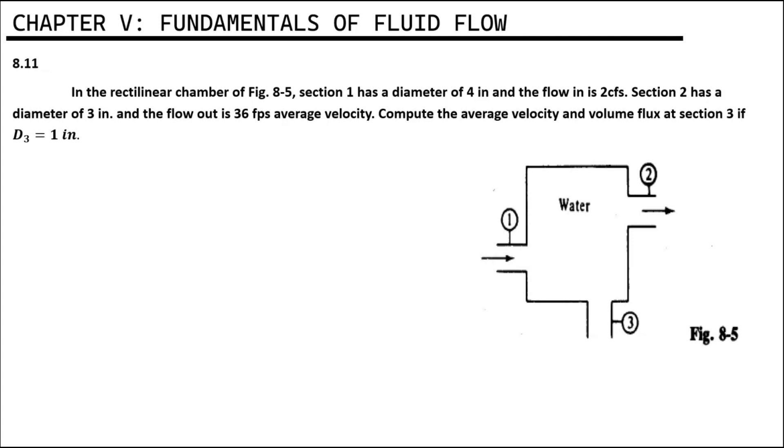Before we solve our problem, we need to identify first the given values in this problem. We have Q1 equals 2 CFS, Q2 equals 36 FPS, D1 equals 4 inches, and D2 equals 3 inches.